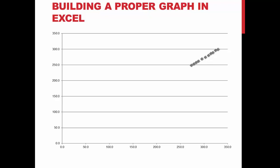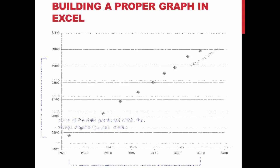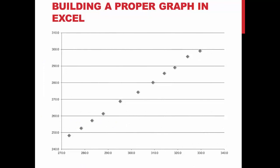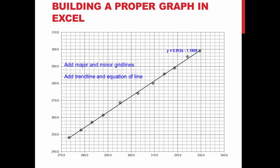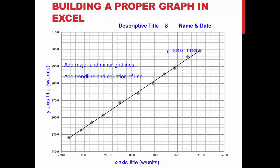What are some aspects missing from this graph? None of the data points fall within the lower region of the graph, therefore the scale must be changed. The major and minor grid lines are not present. A trendline and the equation of the line are missing. A descriptive title and name and date are missing. The y-axis needs a title and should include units, and the x-axis needs a title and should include units.